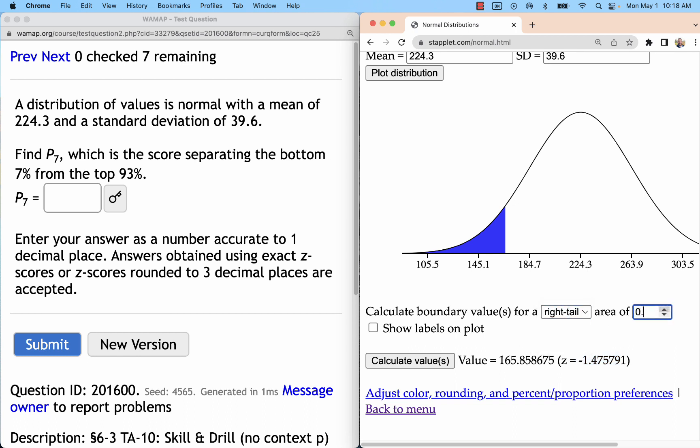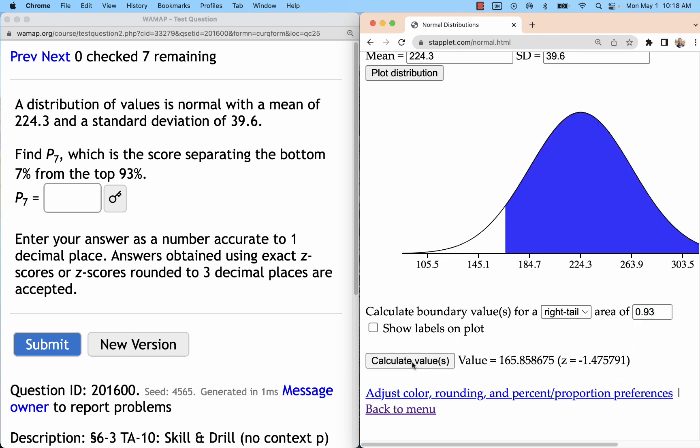You're going to see it just inverts that shading, but otherwise the value stays exactly the same. With one decimal place, that's 165.9.